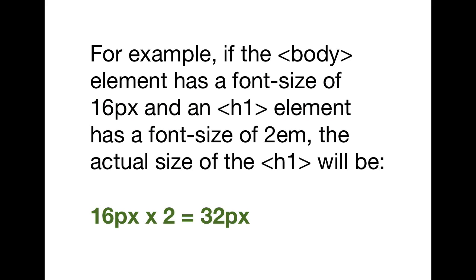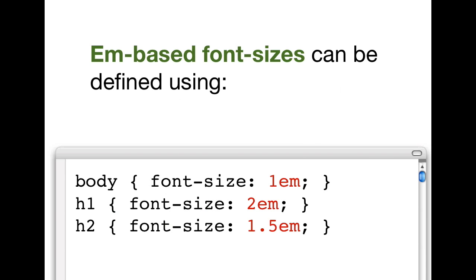For example, if the body element has a font size of 16px and an h1 element has a font size of 2em, then the actual font size of the h1 will be 16px times 2 equals 32px. We can define em-based font sizes using things like this: Body font size 1em, h1 font size 2em, h2 font size 1.5em.